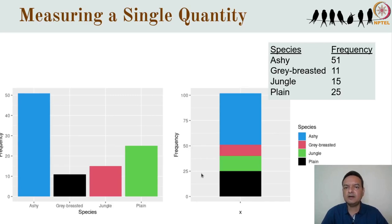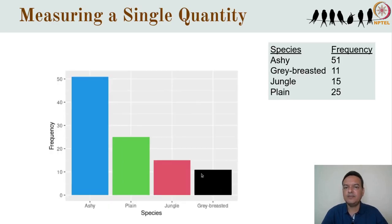The bars can be arranged side by side or stacked. The purpose of the visualization is to easily see which categories are more or less frequent and to look at their relative magnitudes. If there's no natural way to order them, you could arrange them in decreasing frequency for a quick comparison. This kind of bar graph provides for a very quick and easy comparison of the frequencies of different categories.